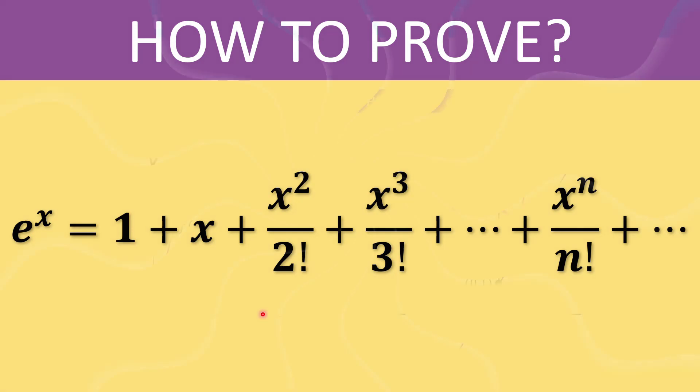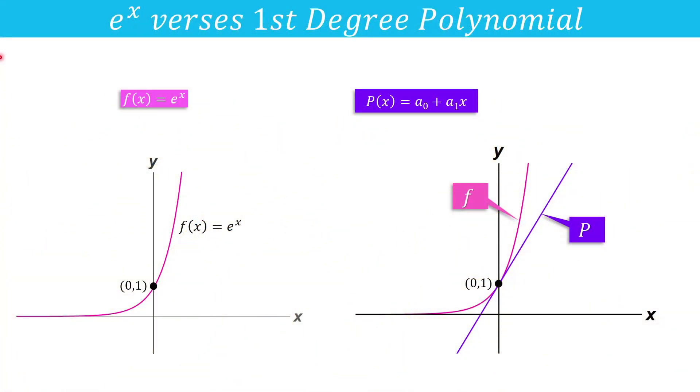This polynomial is centered at x = 0. So let us start. There are many polynomials whose graph passes through the point (0,1), but our task is to find a polynomial whose graph resembles the graph of f(x) = e^x near the point (0,1).